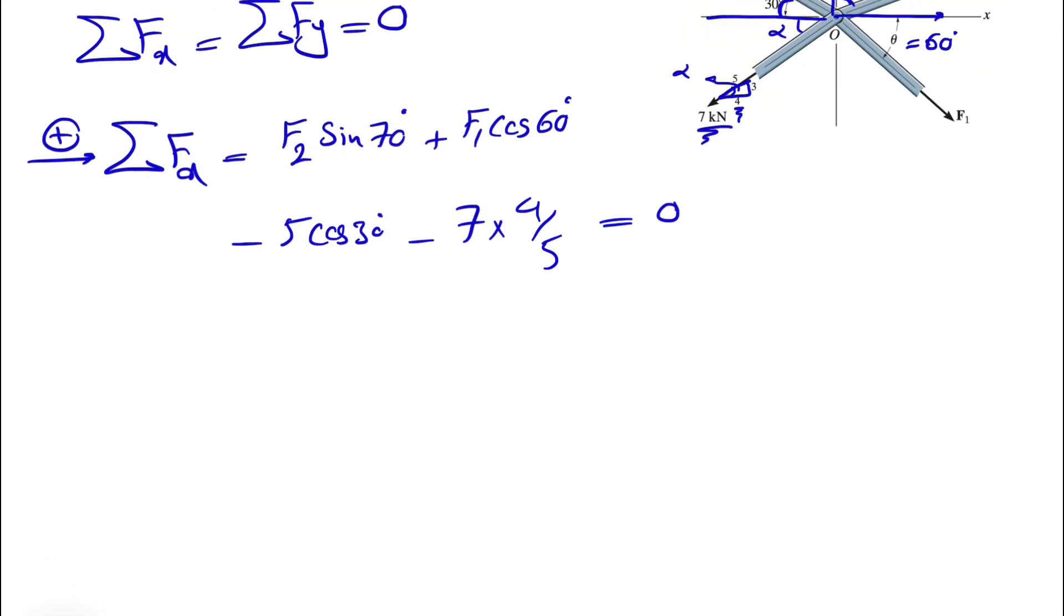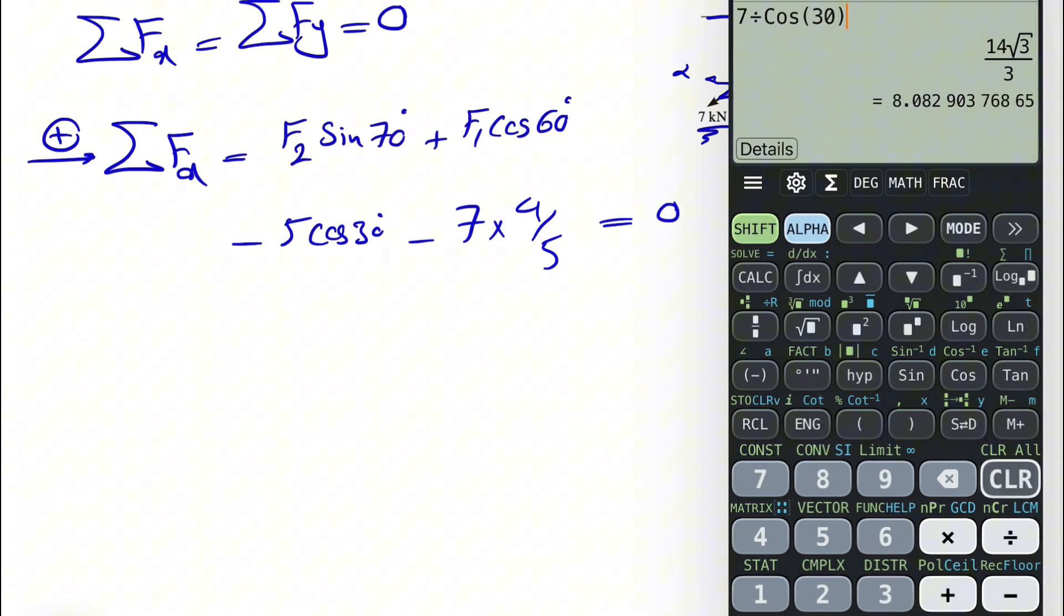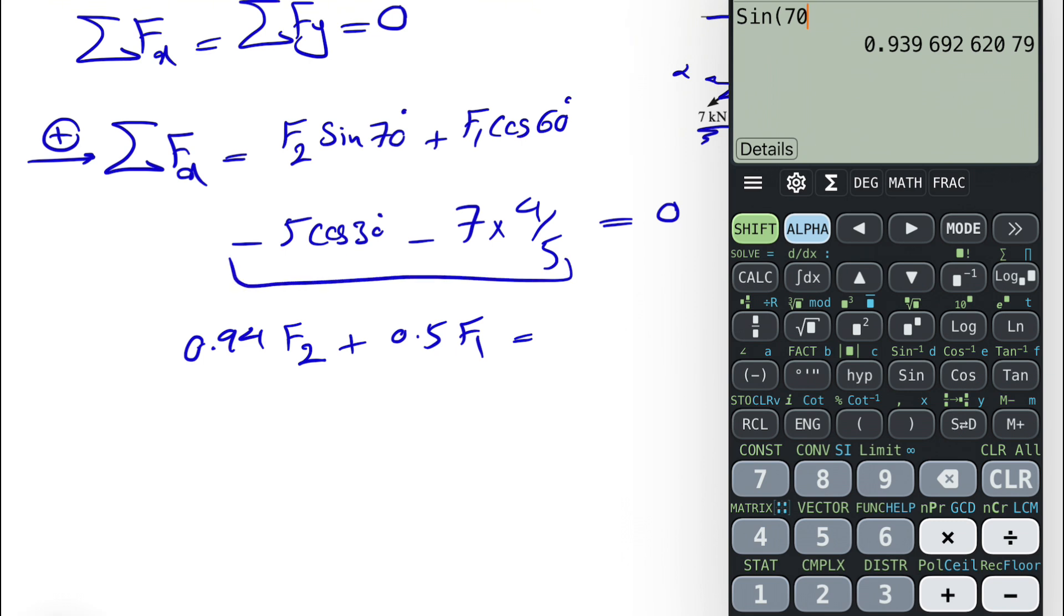Let's rewrite this equation based on the values that we have. So we have the value of sine of 70, which is 0.94 F2, plus cosine of 60, we know is 0.5, F1 is equal to, we're going to bring these two on the other side, so we have 5 times cosine of 30 plus 7 times 4 divided by 5. We're going to bring it on the other side, it will be positive 9.93. We found the first equation.